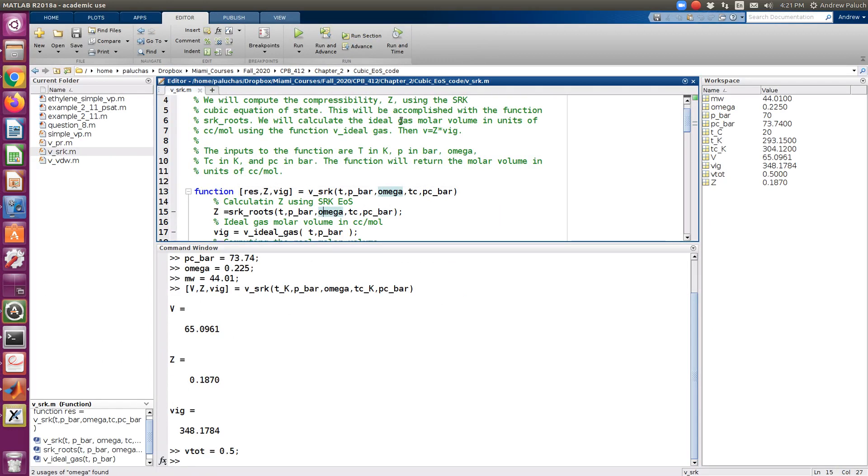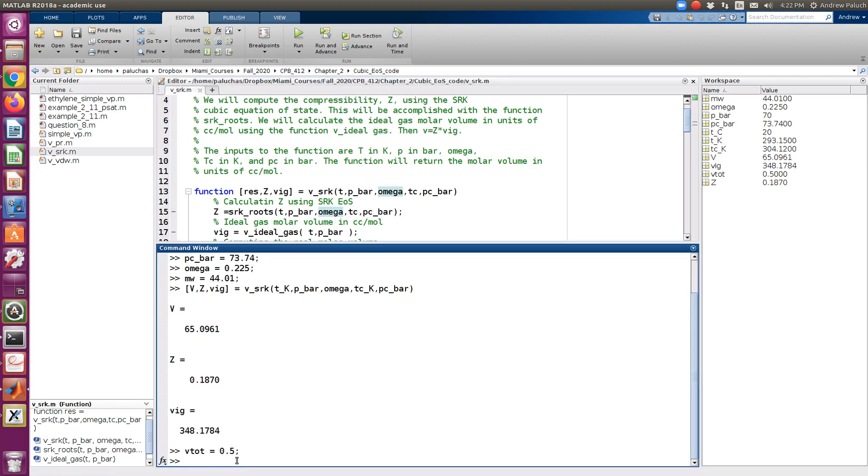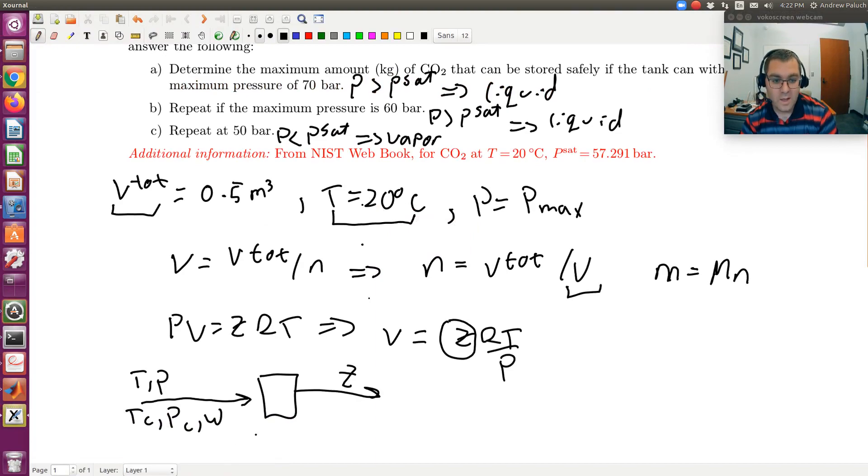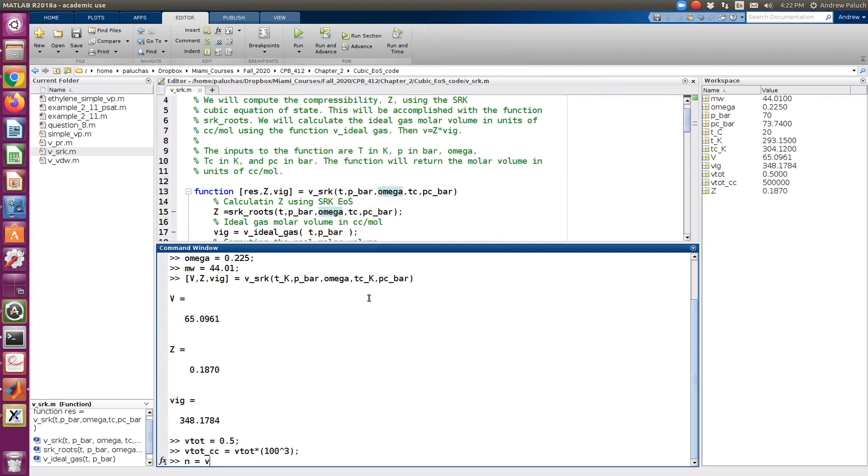So we're going to get volume in units of centimeters cubed per mole. So do I want to convert V total to centimeters cubed or my molar volume to meters cubed per mole? Let's maybe do V total. So if I want V total in centimeters cubed, so cubic centimeters, 100 centimeters are equal to one meter. So it should be V total times 100 cubed. So that should be my total volume in cubic centimeters. So then if I want N, like we said, N is going to be V total in cc's divided by V. So that's how many moles I have.